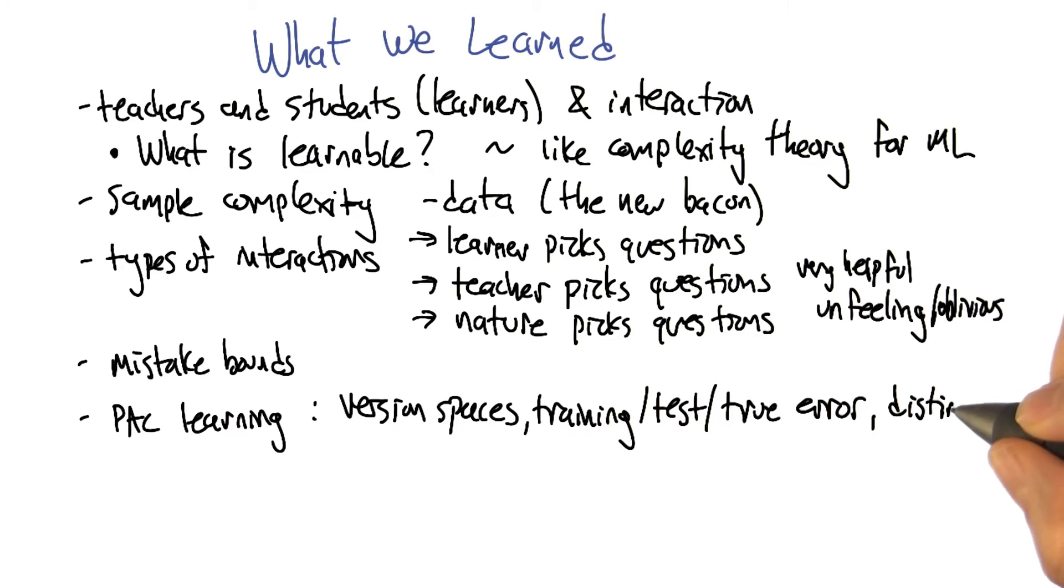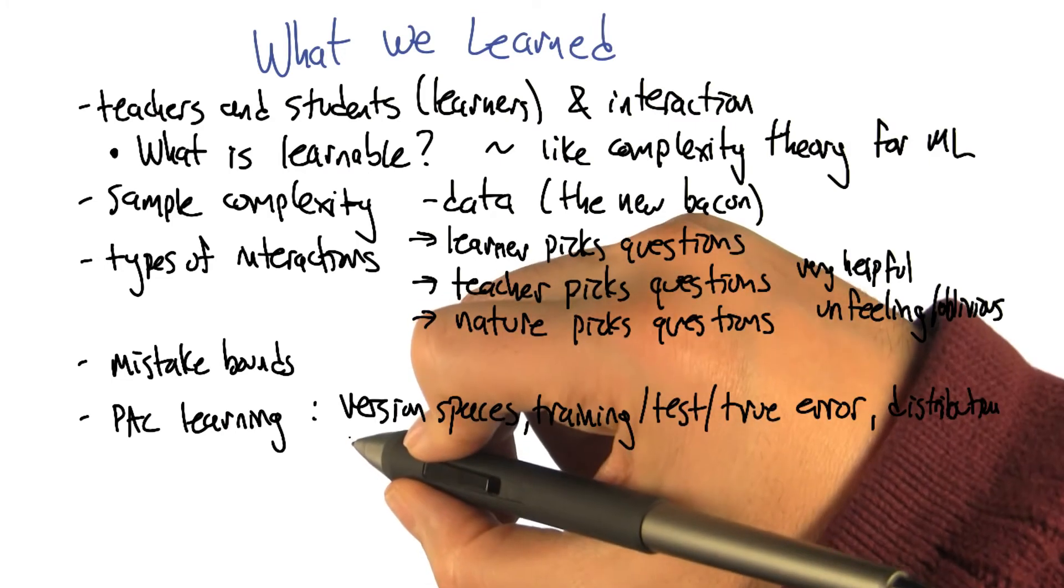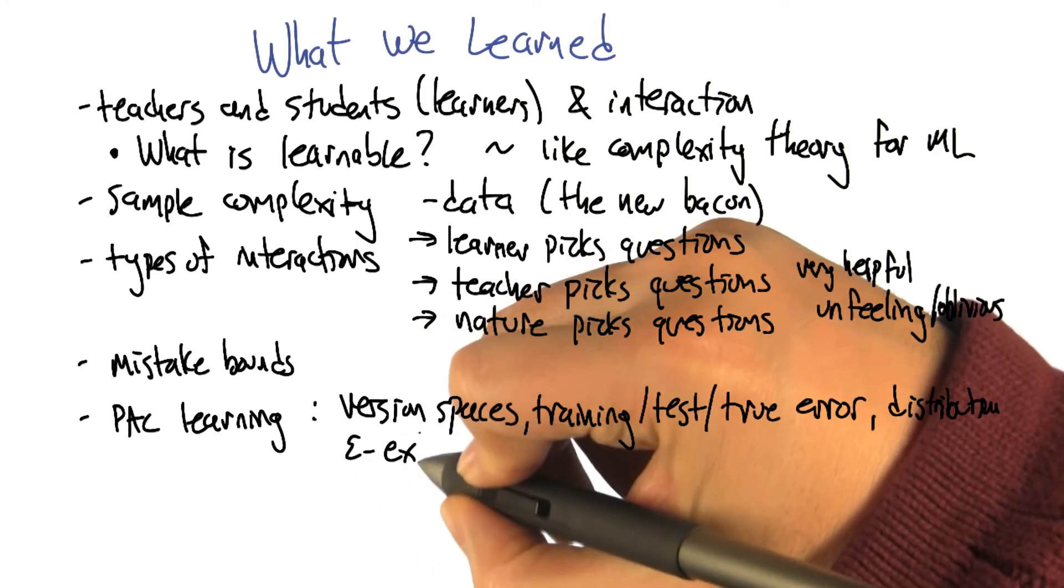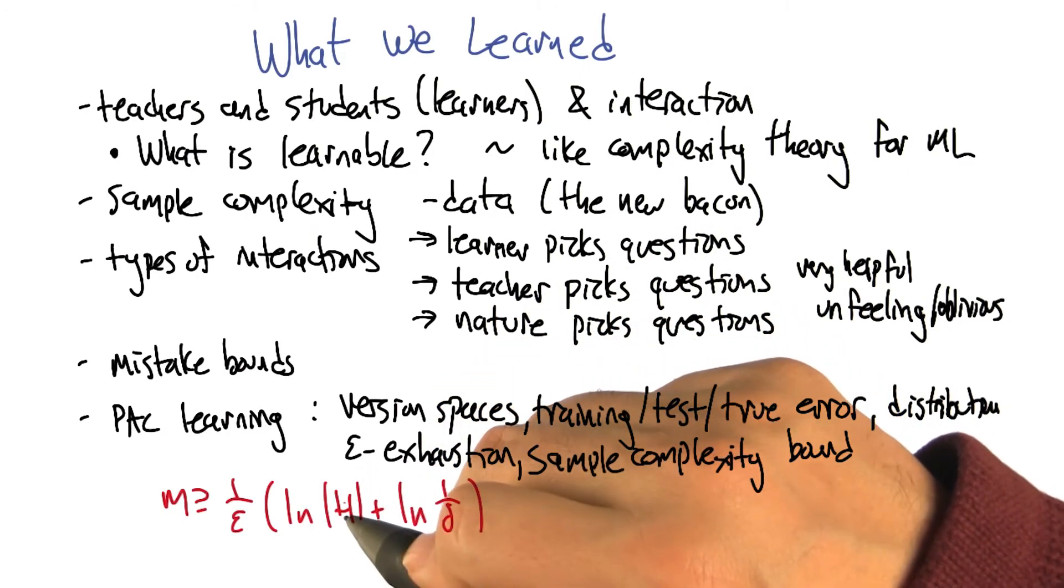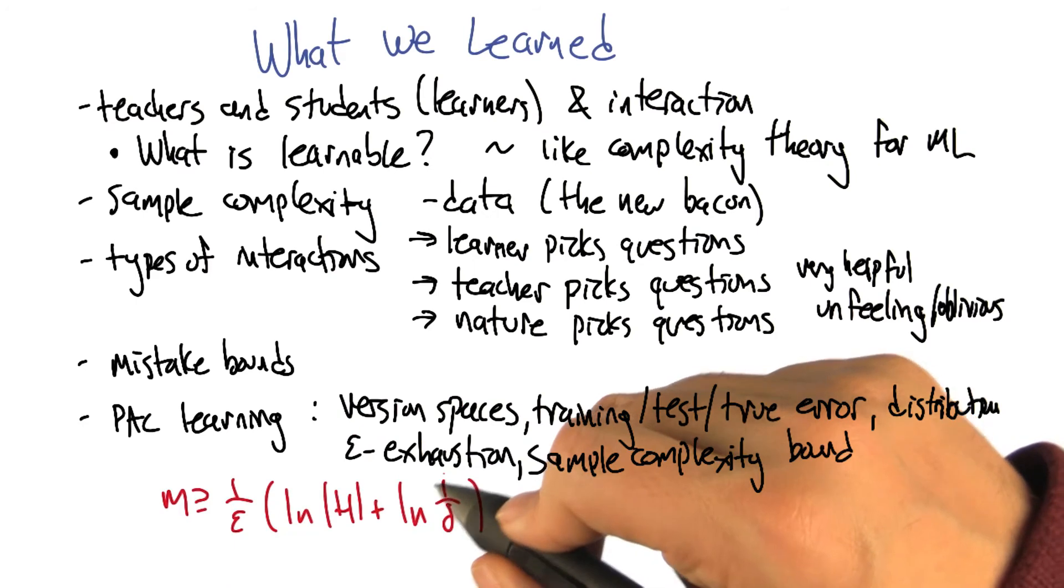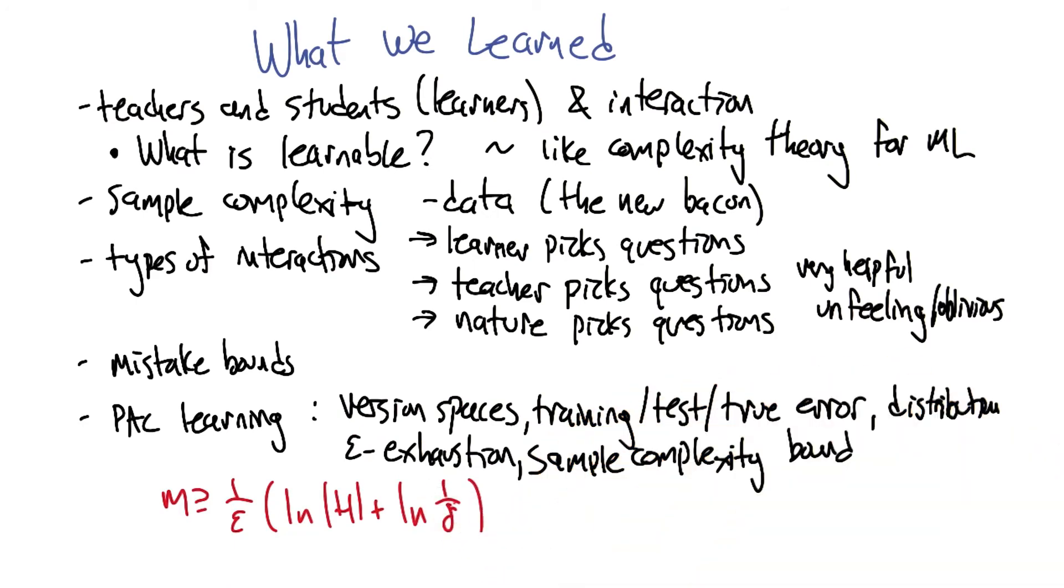And then you introduced the notion of epsilon exhaustion of version spaces and gave us an actual sample complexity bound for the case of distributions in nature. And the sample complexity bound is pretty cool because it depends polynomially on the size of the hypothesis space and the target error bound and the failure probability.